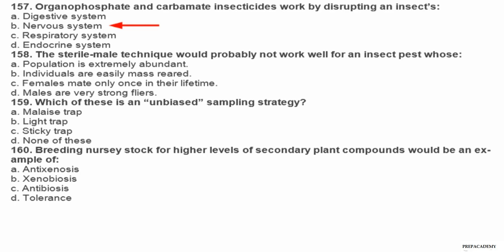Question 158. The sterile male technique would probably not work well for an insect pest whose: A population is extremely abundant, B individuals are easily mass reared, C females mate only once in their lifetime, D males are very strong flyers. Question 159. Which of these is an unbiased sampling strategy? A malaise trap, B light trap, C sticky trap, D none of these. Question 160. Breeding nursery stock for higher levels of secondary plant compounds would be an example of: A antixenosis, B xenobiosis, C antibiosis, D tolerance.